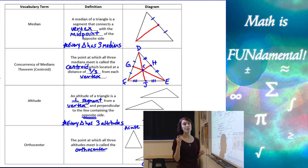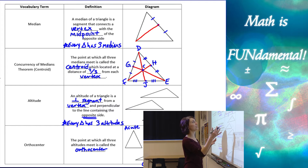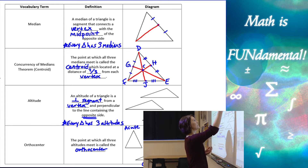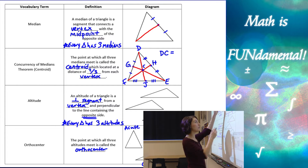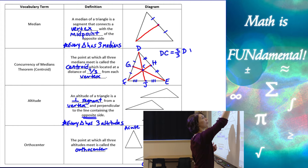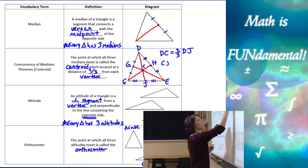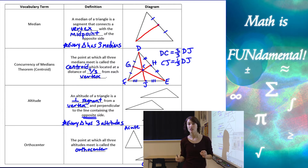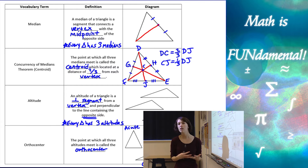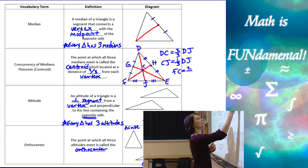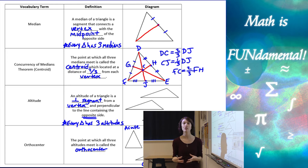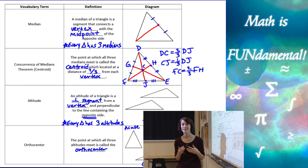All three of those medians meet at a single point, labeled C — that's called the centroid. What's really cool about the centroid is that it breaks up those medians into exactly two-thirds and one-third of the length. So the length DC, from the vertex to the centroid, is two-thirds of the length of the whole median DJ. And CJ is going to be one-third of the entire median DJ. We can write these equations for all of the medians — for example, FC is two-thirds of median FH.